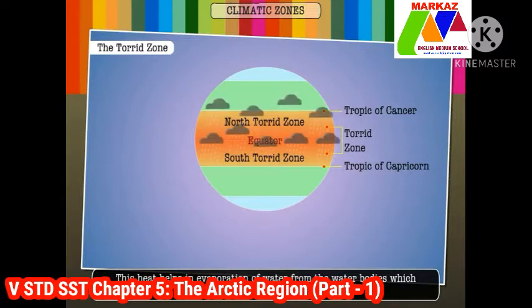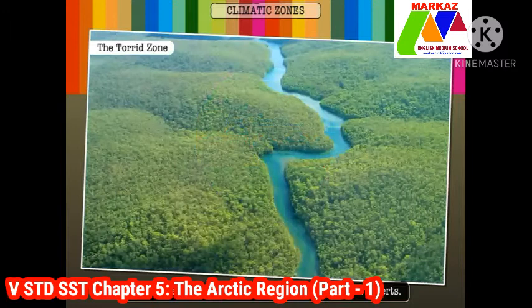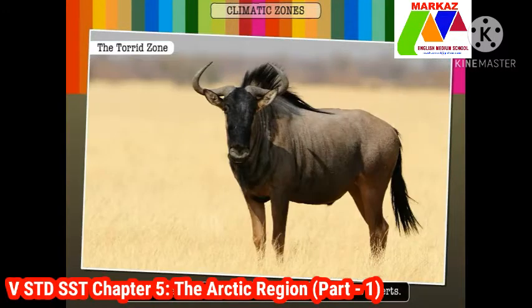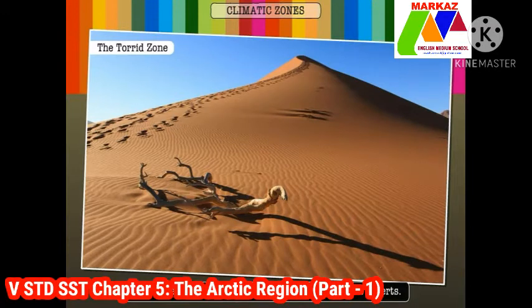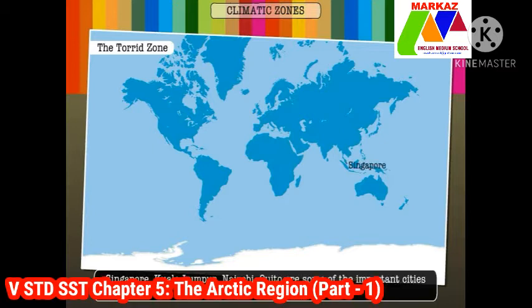The torrid zone receives the vertical rays of the sun and hence remains hot. This heat helps in evaporation of water from water bodies, which results in rain. Thus the region is hot and humid throughout the year. It is home to tropical rainforests, grasslands, and hot deserts. The Sahara desert, the Thar desert, and the Atacama desert are some of the deserts found in this zone.